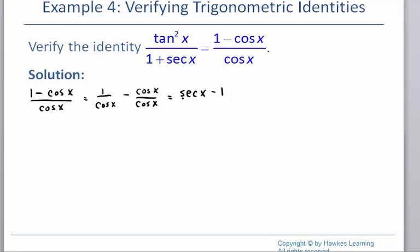So what I'm going to do — keeping in mind that this has a 1 right now — is multiply by 1 plus secant x. Remember, if you do it to the bottom, you also need to do it to the top. The only reason I'm doing that is so I will get the denominator I want.